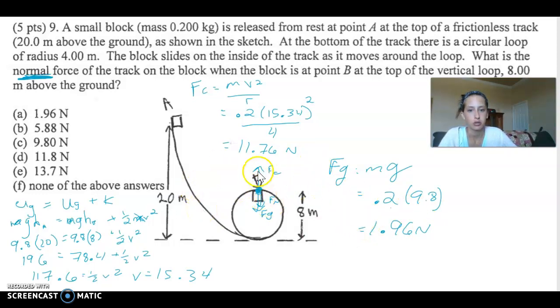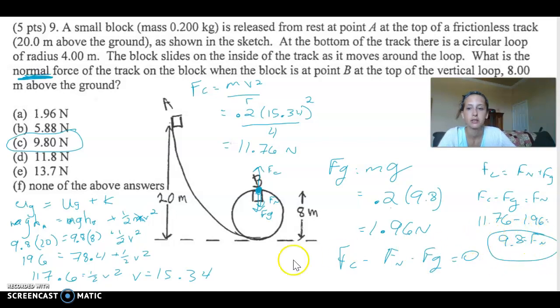So what you need to do is up minus down to get what's left. So we do 11.76 minus 1.96. That gets us 9.8. Centripetal force equals normal plus gravity. So if you want to get normal, you've got to do centripetal minus gravity. So centripetal is 11.76, gravity is 1.96, and that's how we got 9.8 as our normal force.